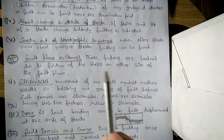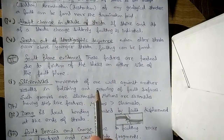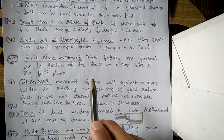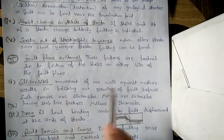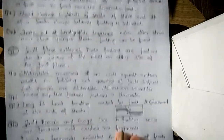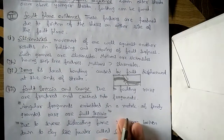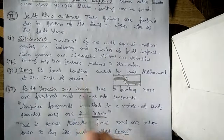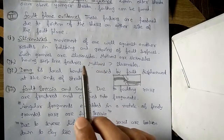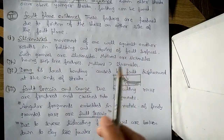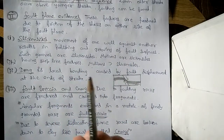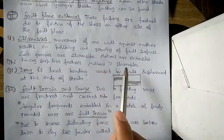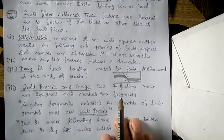Fault plane evidences are features produced due to friction of blocks on either side of the fault plane. The first structure is slicken sides — movement of one wall against another results in polishing and grooving of fault surfaces. Those slicken sides with step-like features are called mullions, and mullions are greater in size than slicken sides.